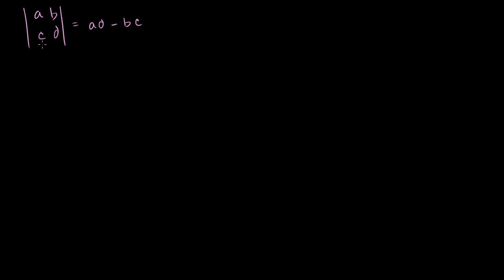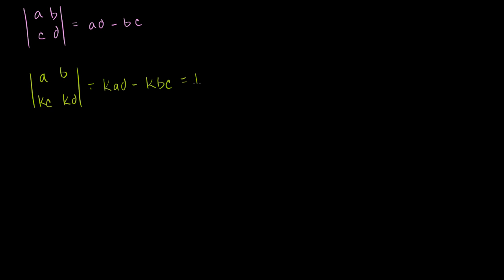Now what if we were to multiply one of these rows by a scalar? Let's say we multiply it by K. So we have the matrix A, B in the first row, and K·C, K·D in the second row. The determinant is going to be A times K·D minus K·C times B, which equals K·AD minus K·BC. If we factor out the K, we get K times (AD minus BC).